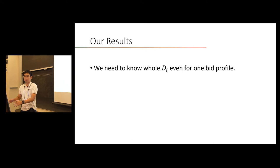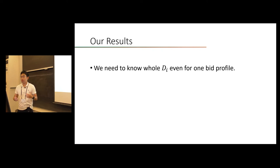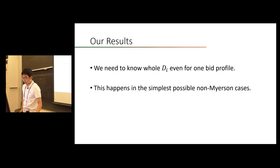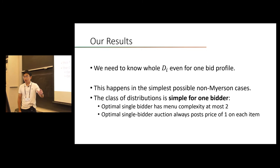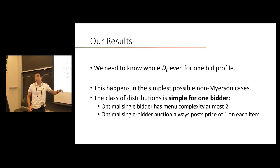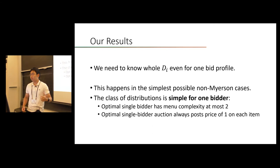Our proof is a reduction from disjointness. Our result shows that we need to know essentially the whole distribution just to implement the optimal auction for one bid profile — a huge gap between the multidimensional setting and the single-dimensional setting. In the single-dimensional setting, the auctioneer only needs the virtual value, representable in O(log K) bits. This happens in the simplest possible non-Myerson cases. The class of distributions we construct is simple for one bidder: the optimal single-bidder auction has menu complexity at most two, and always posts a price of one on each item. The non-locality phenomenon is intrinsic to the multidimensional setting — the complexity does not come from the complexity of the single-bidder auction.